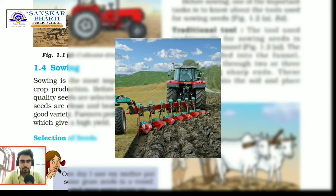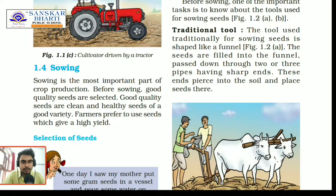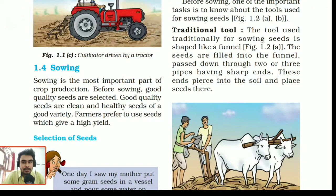The next topic is sowing, which means planting of crop plants into the crop field. Before sowing, selection of good quality seeds is very important. Good quality seeds should be clean and healthy, have a good variety, and also have a high yielding capacity. Then they are considered a good variety of seeds.